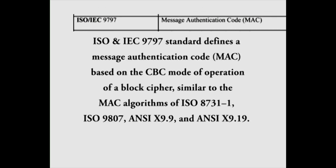ISO and IEC 9797 standard defines a MAC message authentication code based on the CBC mode of operation of a block cipher, similar to the MAC algorithm of ISO 8731 part 1, ISO 9807, NCX 07, NCX 9.9 and NCX 9.19.